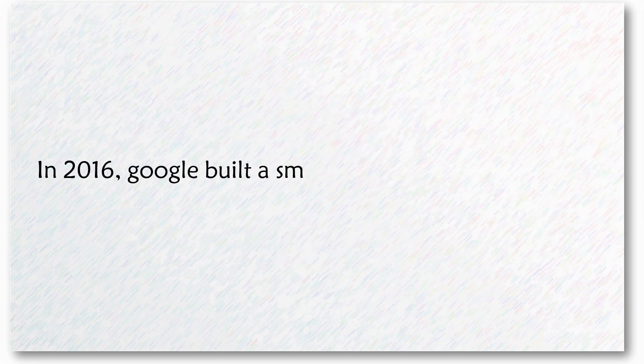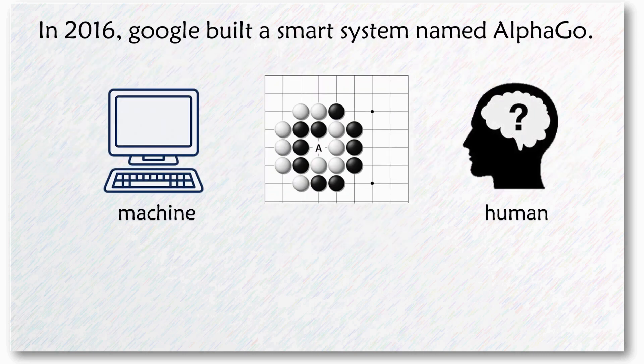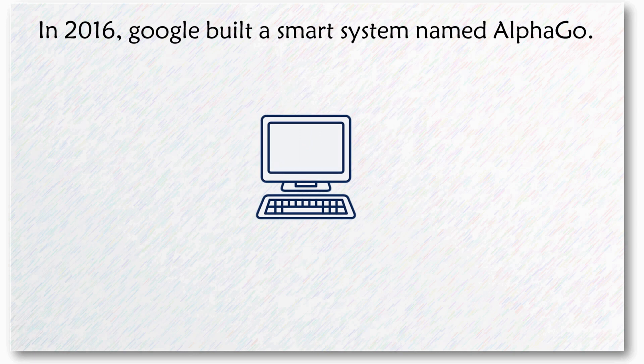In 2016, Google built a smart system named AlphaGo. AlphaGo can play Go with human masters, and surprisingly, it wins the human beings.